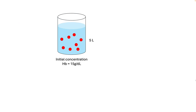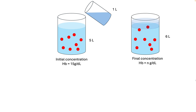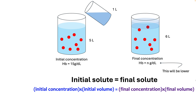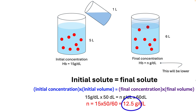Let's say we have 5 liters of fluid and a solute concentration of 15 grams per dL. When we dilute it with 1 liter of water, our new volume is going to be 6 liters and the final concentration will be lower, as the same solute is now distributed in 6 liters rather than 5 liters. Since the amount of solute in both situations is the same, initial concentration multiplied by initial volume equals final concentration multiplied by final volume. Solving for the new concentration, we get 12.5 grams per dL.